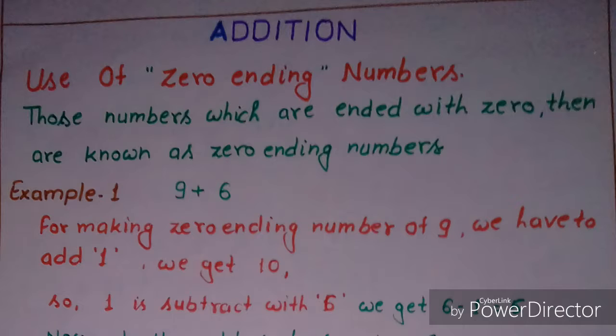The first trick is the use of zero-ending numbers. First of all, we have to know about zero-ending numbers. The numbers which end with zero are known as zero-ending numbers, such as 10, 20, 30, 40, etc.